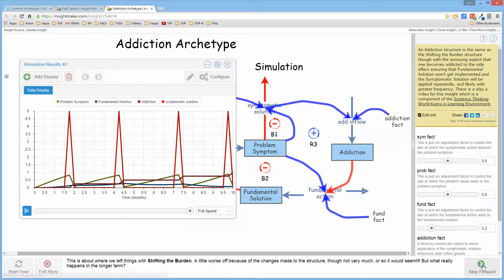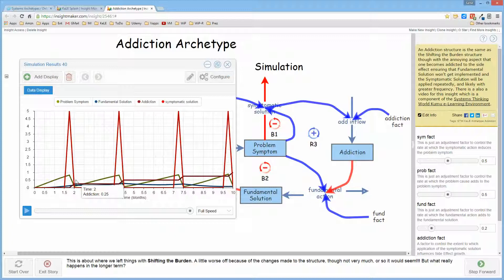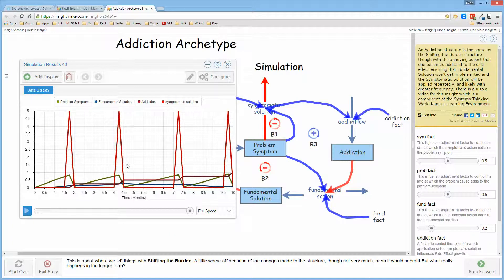So if you begin the same place that we left off with the shifting the burden structure and the symptomatic solution being invoked repeatedly to take care of the problem symptom that arises over and over again, the structure looks pretty much the same.